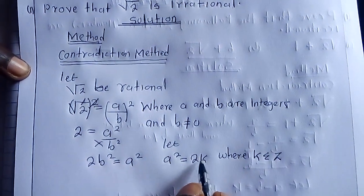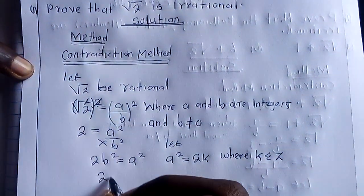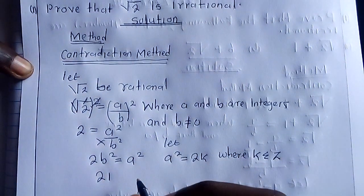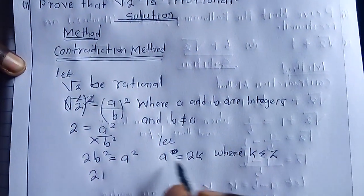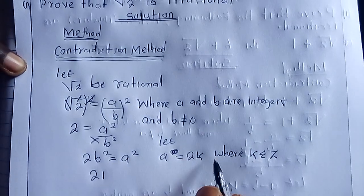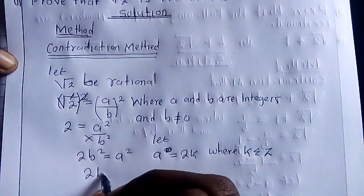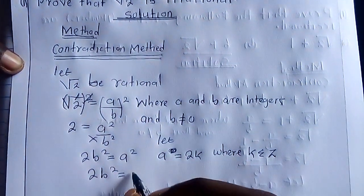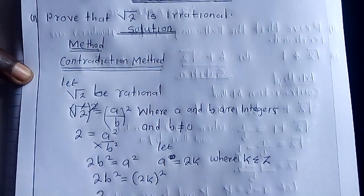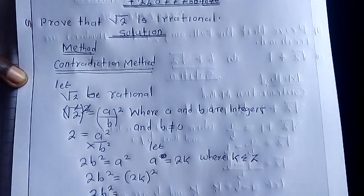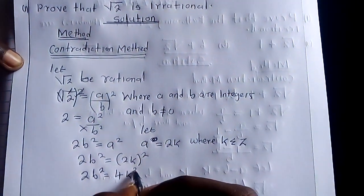Now, if A squared equals 2K, then automatically what we are saying is we are going to have A equal to 2K, not squared. So, you say 2B squared is equal to, now, where there is A, we are going to put 2K, and this is going to be 2B squared equal to 4K squared.